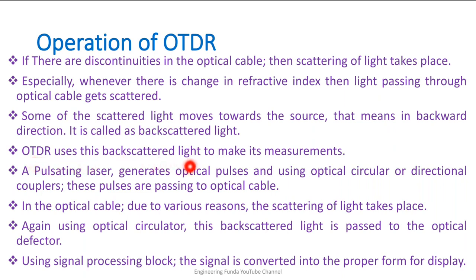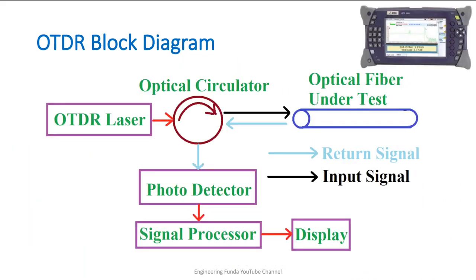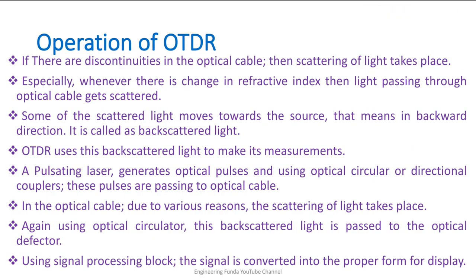OTDR uses this back-scattered light to make its measurements. A pulsed laser generates optical pulses, and using an optical circulator or directional coupler these pulses are sent through the optical cable. Due to various reasons scattering takes place, and the optical circulator circulates the back-scattered light to the optical detector. Using signal processing, this signal is converted into proper form for display, allowing us to determine what type of fault is happening.